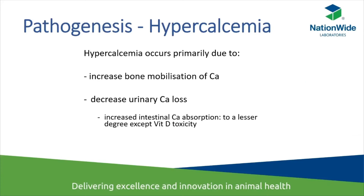Hypercalcemia primarily results from either increased bone mobilization of calcium or decreased urinary calcium loss. Increased intestinal calcium resorption has a variable contribution and is shown in smaller font, as it's mainly the other two mechanisms that drive the pathogenesis. However, in cases of vitamin D toxicity, the intestinal source becomes a much greater contributor.